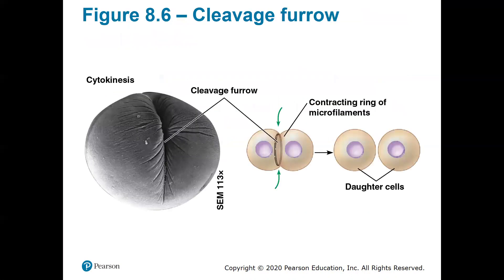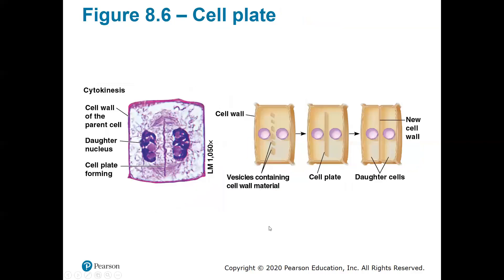Cytokinesis of an animal cell undergoes a cleavage furrow — I like to think of it as literally pinching a cell into two parts. It will form once the two nuclei have separated at the end of telophase, and it will literally pinch itself apart to separate into two daughter cells. That's different compared to plant cells, which have to build a cell plate. Plant cells have very big cell walls and are not able to move or pinch themselves apart, so they build a wall — a cell wall — to separate the two cells and create two new daughter cells.